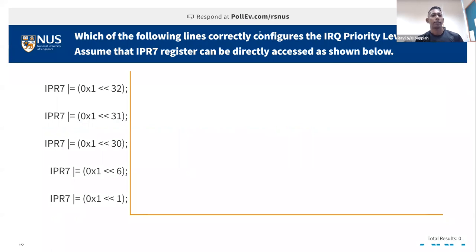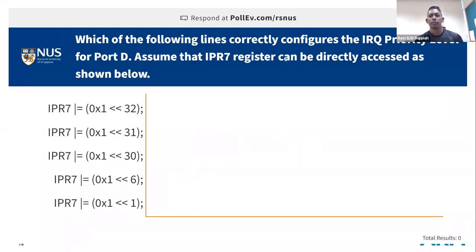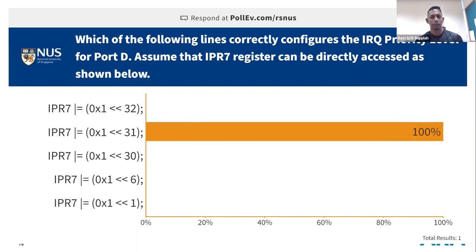Before we get into the TPM module, let me do a quick recap. Make sure you have your data sheet open. The question is: which of the following lines correctly configures the IRQ priority level for Port D? This was actually one of the midterm questions, so it's a good time to open your PDF, go to the interrupt section, and look at how to configure Port D. Focus on the question and answer based on what you think is right.